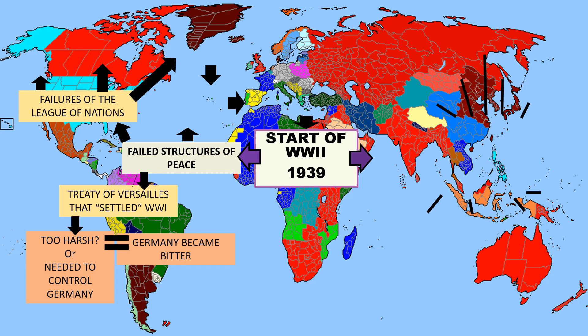The second failed structure of peace that contributed to the cause of the Second World War in 1939 is the failure of the League of Nations. The League of Nations was an international organization to mediate between countries to keep and maintain peace in the world after World War I. They failed to do that by not having consequences for countries that refused to come to the mediation table and work out their differences in ways aside from war.